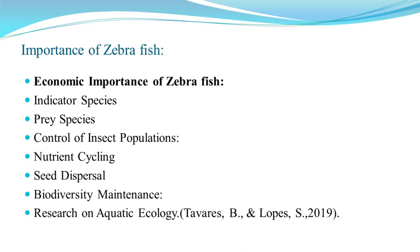Zebrafish play an important role in nutrient cycling. Being omnivorous, they consume plant matter, algae, and small invertebrates, breaking down organic matter. They also aid in seed dispersal, support biodiversity, and are useful for research in aquatic ecology, helping study habitat preferences and behaviors.